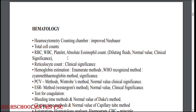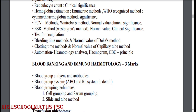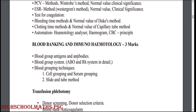Absolute eosinophil count. Reticulocyte count. Hemoglobin estimation. PCV methods. ESR method — normal value and clinical significance. Tests for coagulation: bleeding time methods, normal value by Duke's method. Clotting time methods, normal value by capillary tube method. Automation.